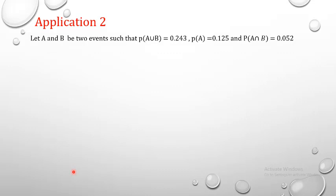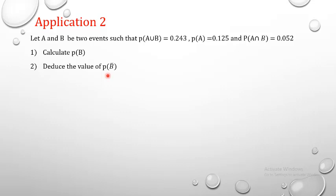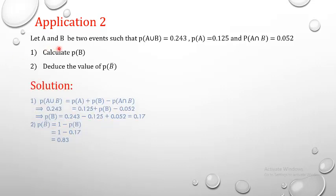Application: let A and B be two events where P(A∪B) = 0.243, P(A) = 0.125, and P(A∩B) = 0.052. Calculate P(B) by applying property 3: P(A∪B) = P(A) + P(B) − P(A∩B), giving P(B) = 0.17. Then P(B̄) = 1 − P(B) = 1 − 0.17 = 0.83.